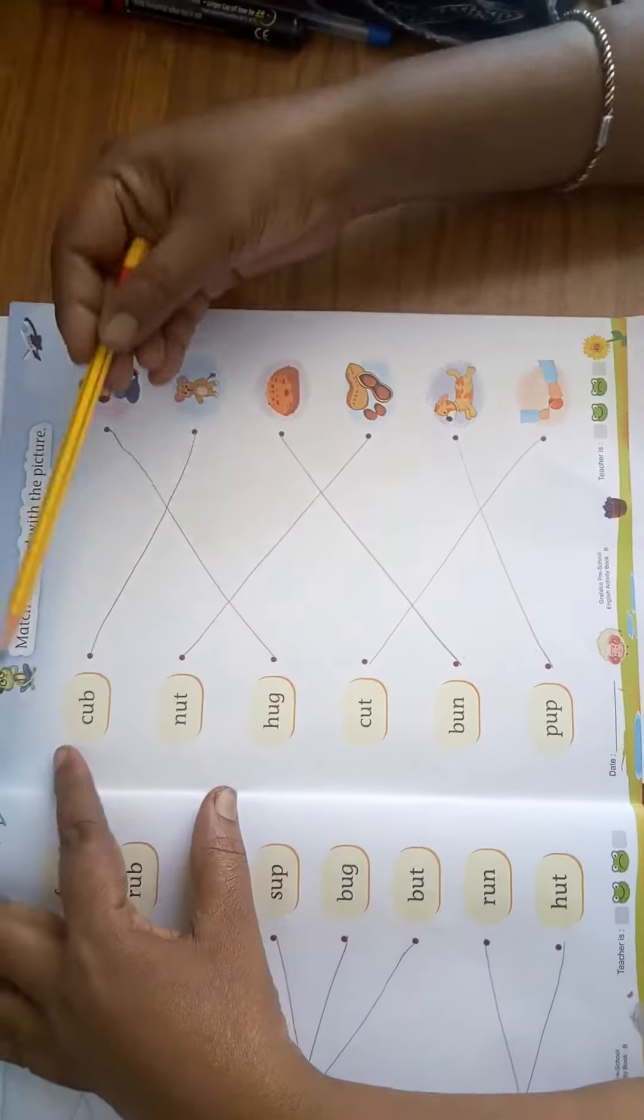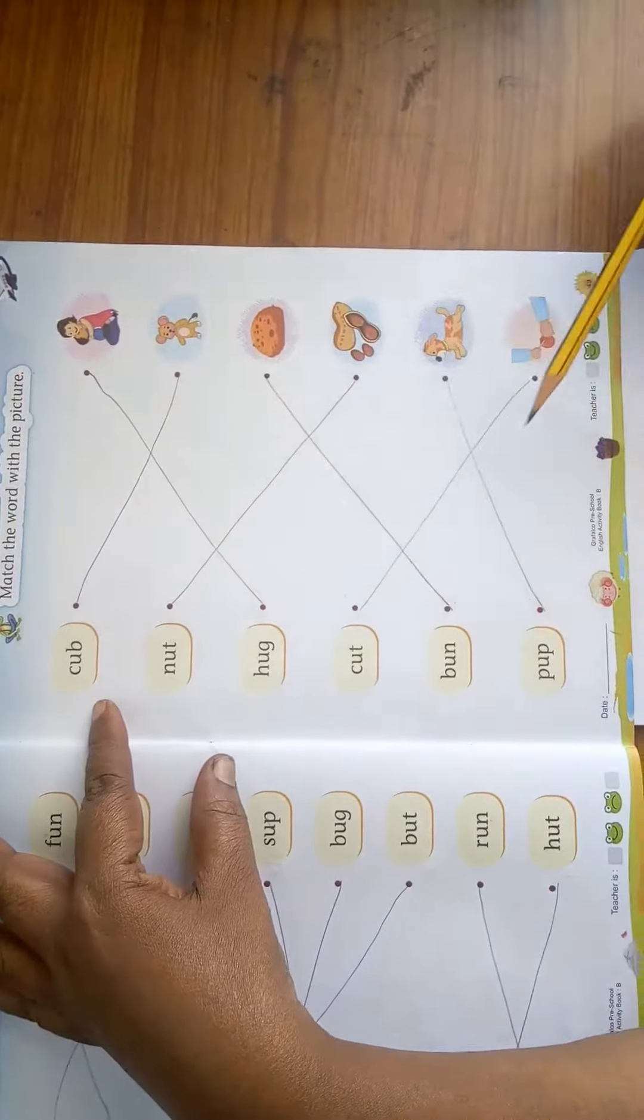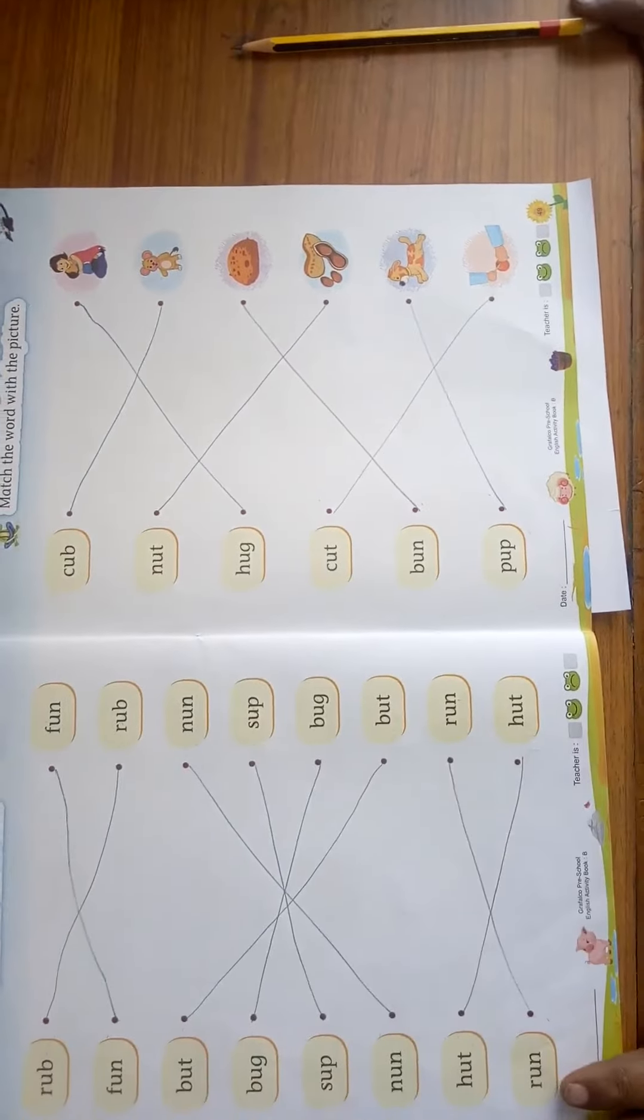Once again I will read for you children. Cub, nut, hug, cut, bun, pup. Thank you. God bless you.